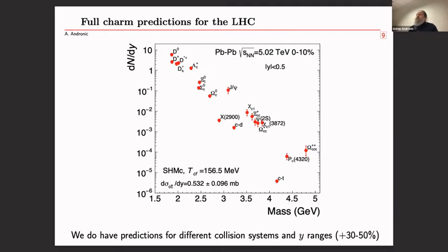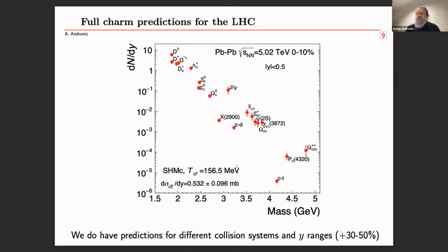Let me now discuss the full charm predictions for the LHC, also seen in Alex's presentation. The full zoo includes the charm neutron and charm triton that Alex addressed, as well as exotic states like a pentaquark of mass 4.3 GeV discovered by LHCb, the triple-charm Omega, and the famous X(3872) — now called chi_c(3872). The model can predict many species as soon as their mass and quantum numbers are known — it's a very simple model.